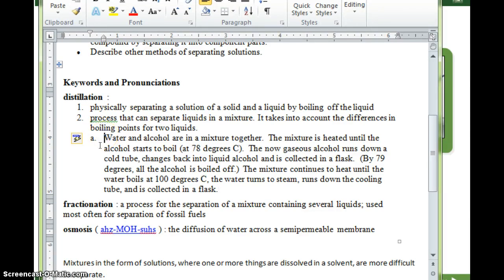Okay, so I made a second definition for distillation, and I just copy-paste that process that can separate liquids in a mixture. It takes into account the differences in boiling points for two liquids. So, then I just wrote about what I just talked about. Water and alcohol are in a mixture together. The mixture is heated until the alcohol starts to boil at 78 degrees Celsius. The now gaseous alcohol runs down the cold tube, changes back into liquid alcohol, and is collected in the flask. By 79 degrees, all the alcohol is boiled off, because remember, during a phase change, the temperature does not change. On our phase change graphs, we saw a flat line showing that it takes time, and it takes heat energy, heat energy to break those bonds apart, but the temperature stays constant during a phase change. So, by 79 degrees, all the alcohol is boiled off. The mixture then continues to heat until the water boils at 100 degrees Celsius, the water turns into steam, run down the cooling tube, and is collected in the flask.